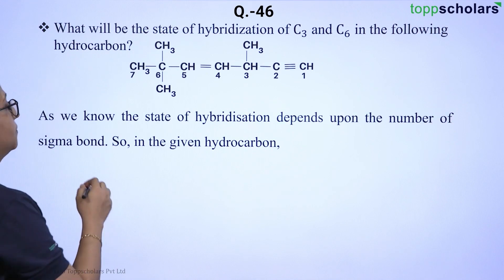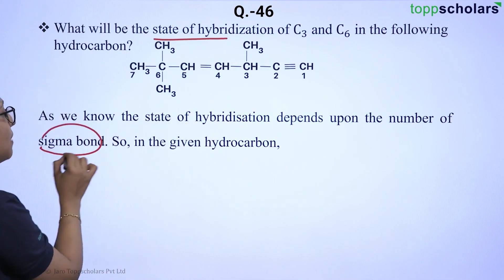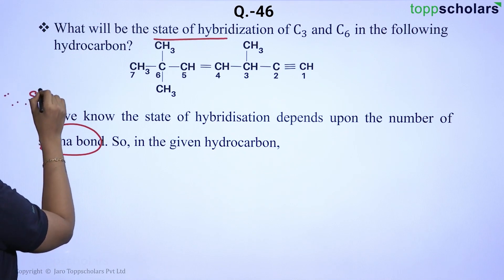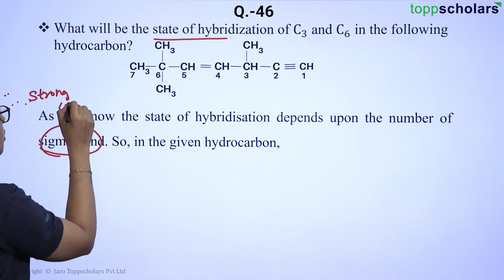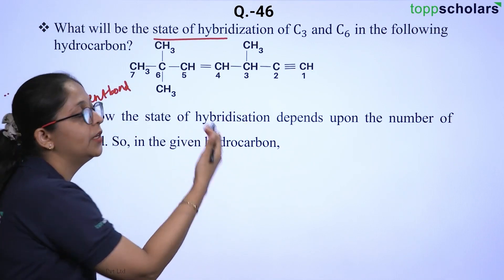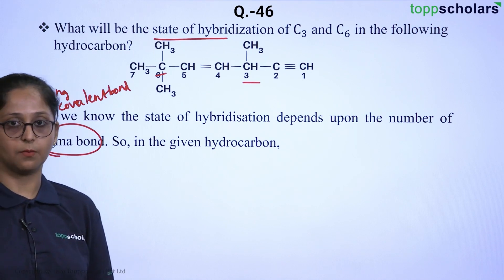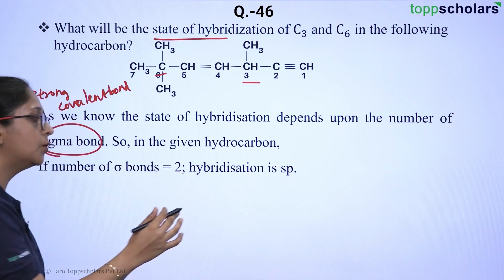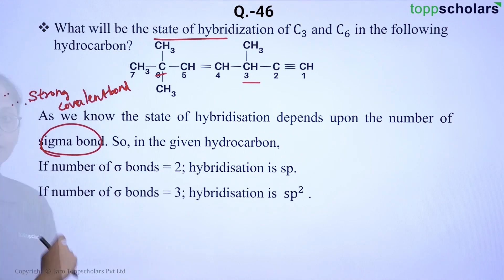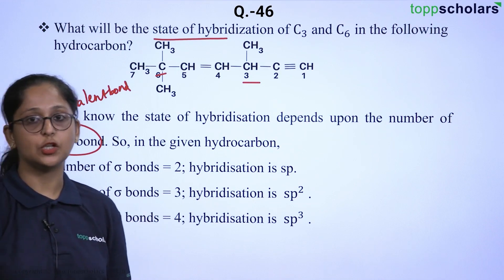To determine the state of hybridization of a specific carbon position, it majorly depends on the number of sigma bonds present. The sigma bond is the strongest covalent bond. The rule is: if the number of sigma bonds equals 2, hybridization is SP; if the number of sigma bonds is 3, hybridization is SP²; and if the number of sigma bonds is 4, hybridization is SP³.